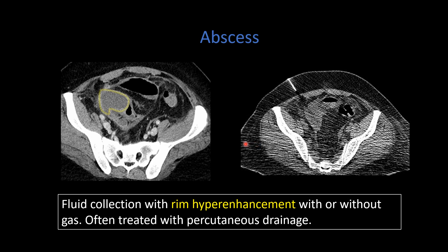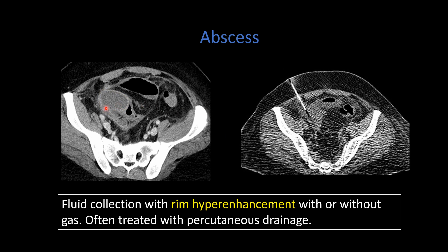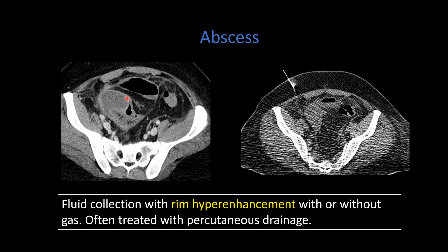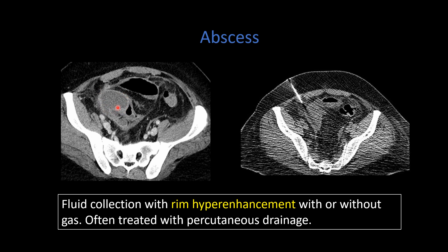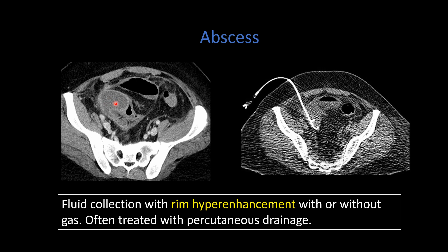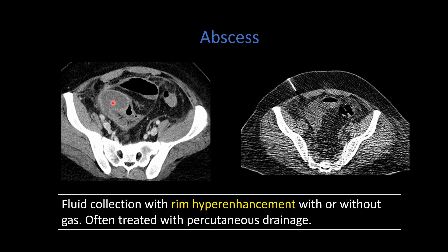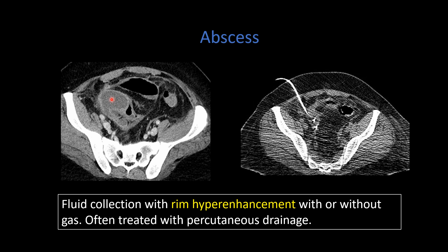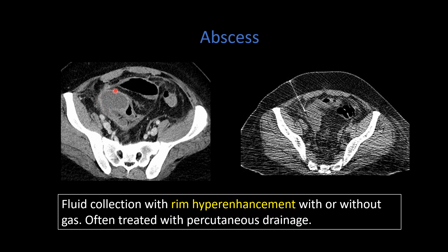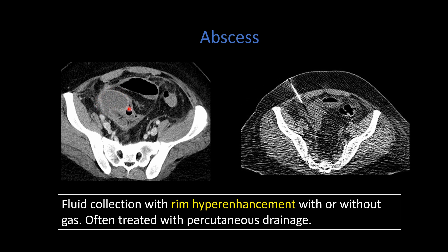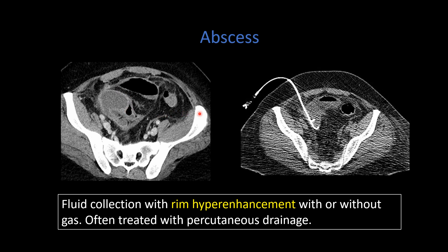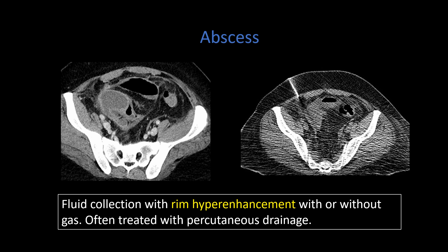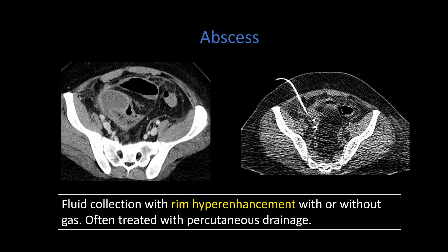Abscesses, as radiologists we are generally familiar with, are fluid collections as opposed to the mass-like areas of inflammation. These are well-defined and tend to have fluid attenuation or low attenuation within them, although that attenuation can vary based on protein and white blood cell content. Classically, they show some degree of rim hyperenhancement. Nowadays, we often treat abscesses with percutaneous pigtail catheter drainage under CT or ultrasound guidance.